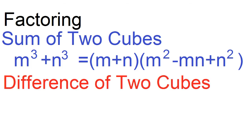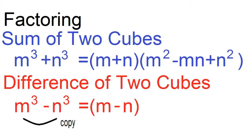Factoring difference of two cubes. This is the form of difference of two cubes: m cubed minus n cubed. To factor, just copy the base of each of the terms and its operation: m minus n. This is the first factor.